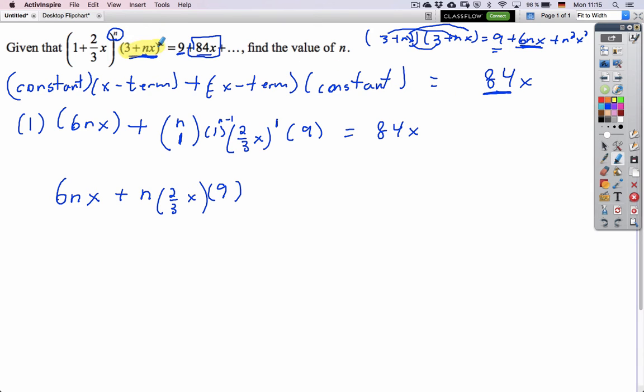So there are really two pieces, this piece and this piece. So now, we can divide everything by, well, not really divide, but we can ignore the x because it's everywhere. So now, you have 6n plus 2/3 of 9 is 6n, and that equals 84.